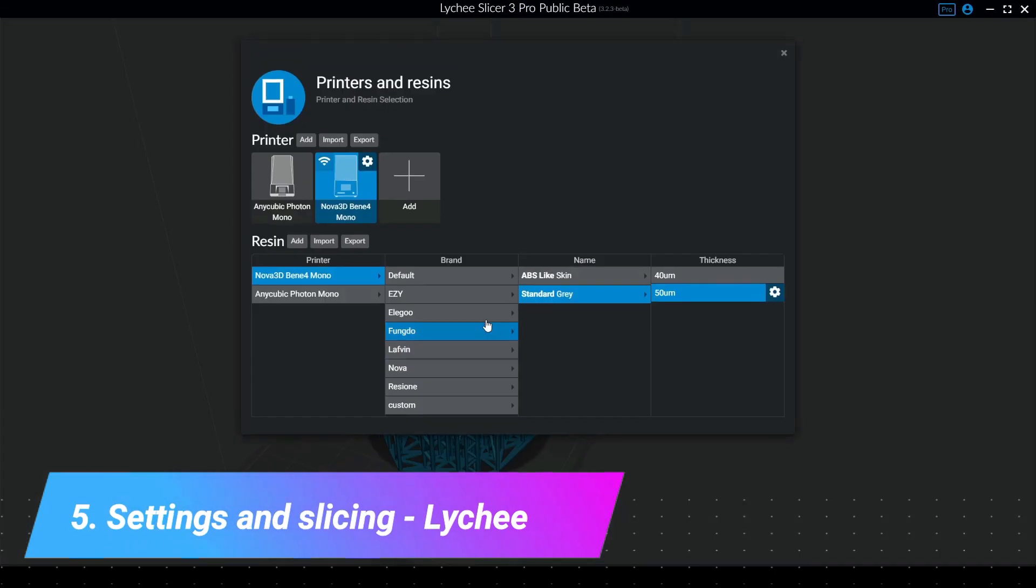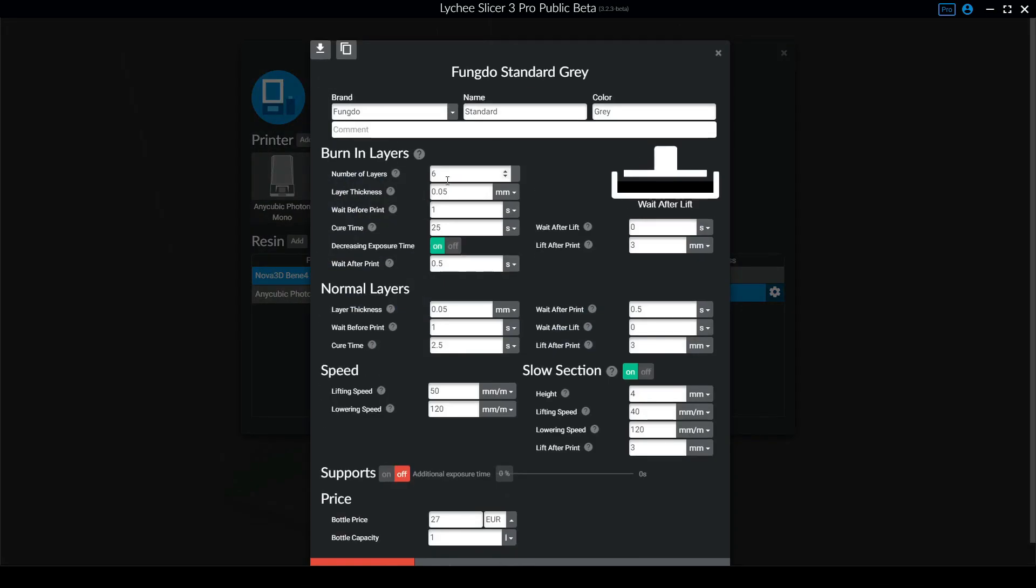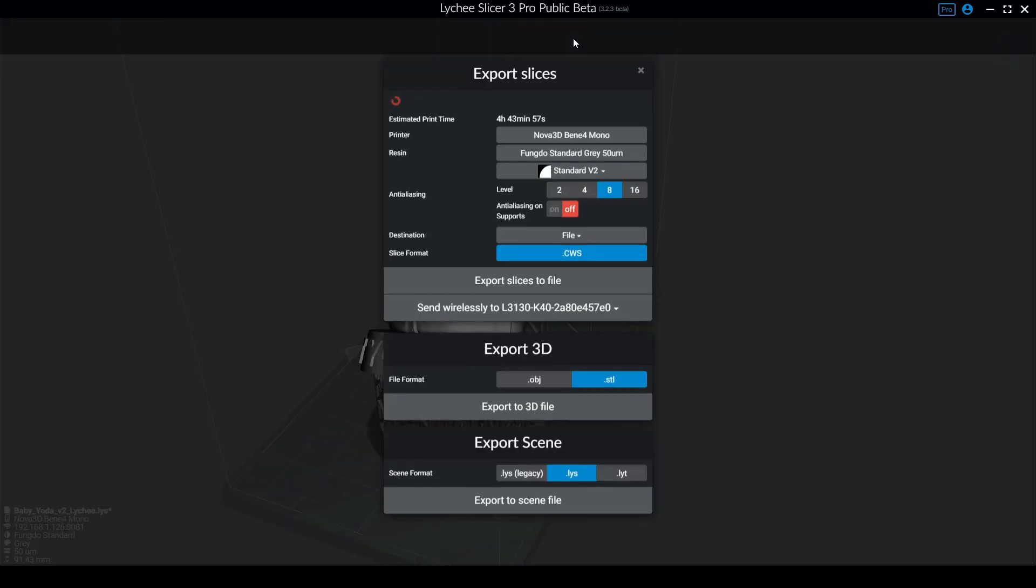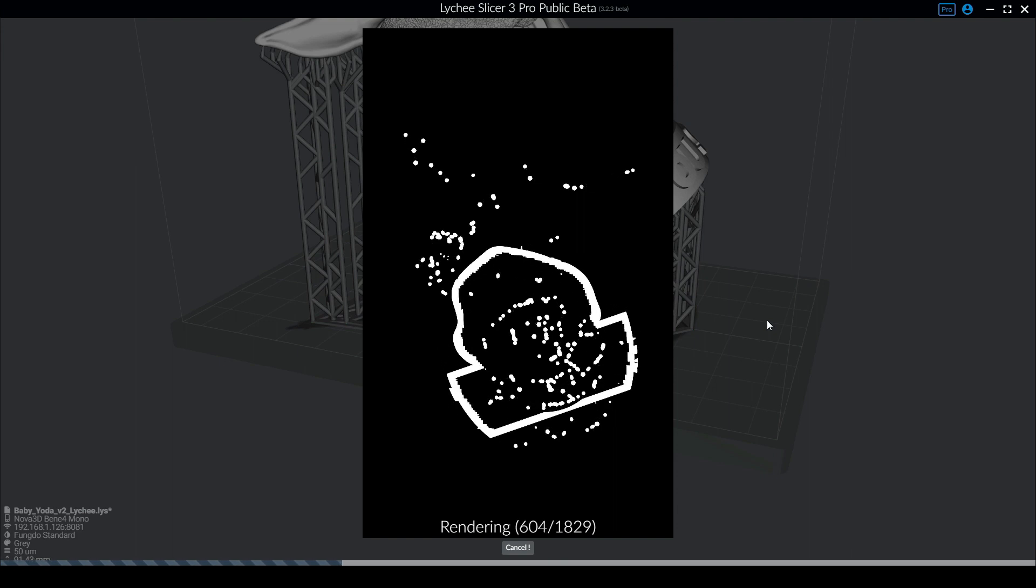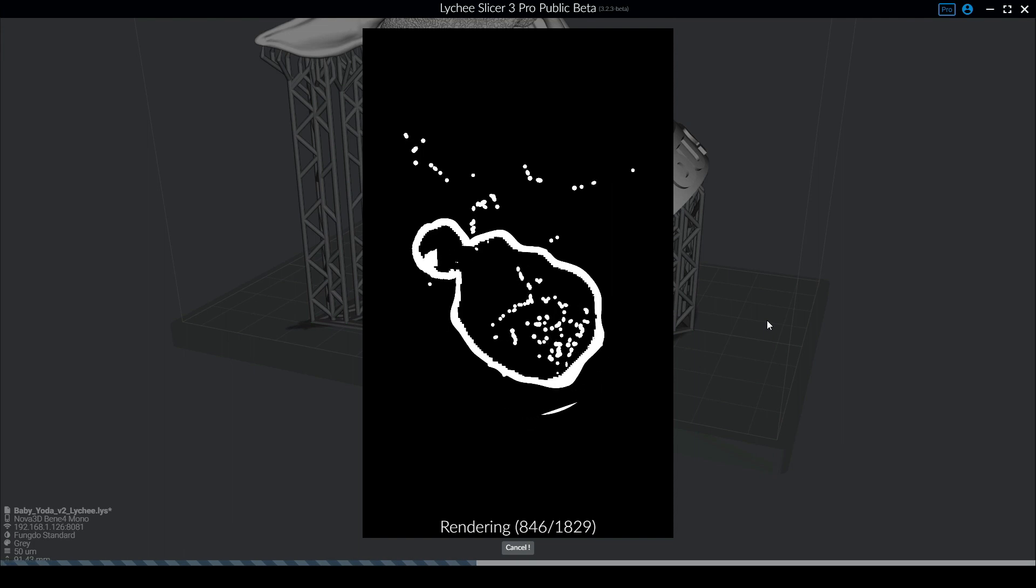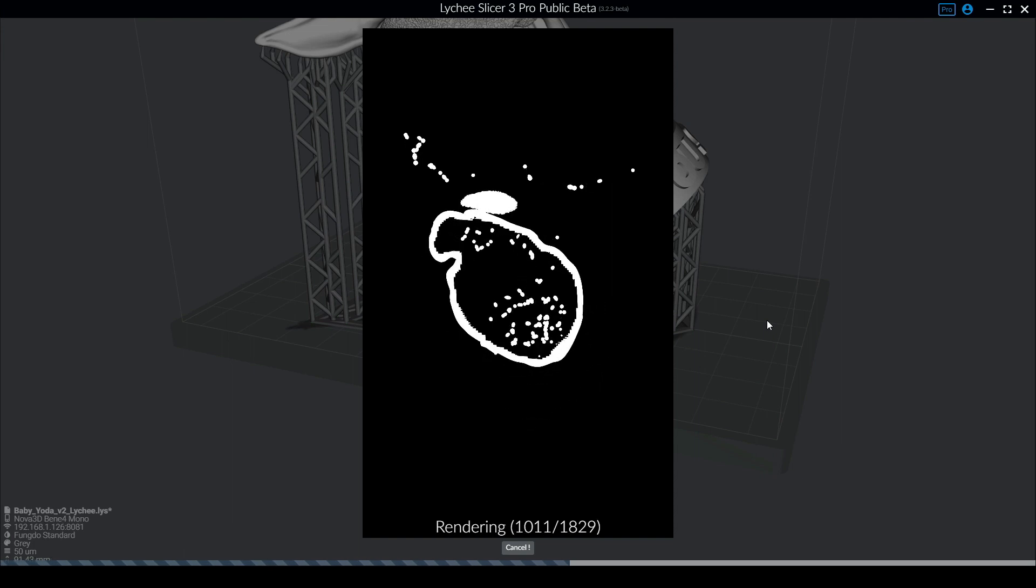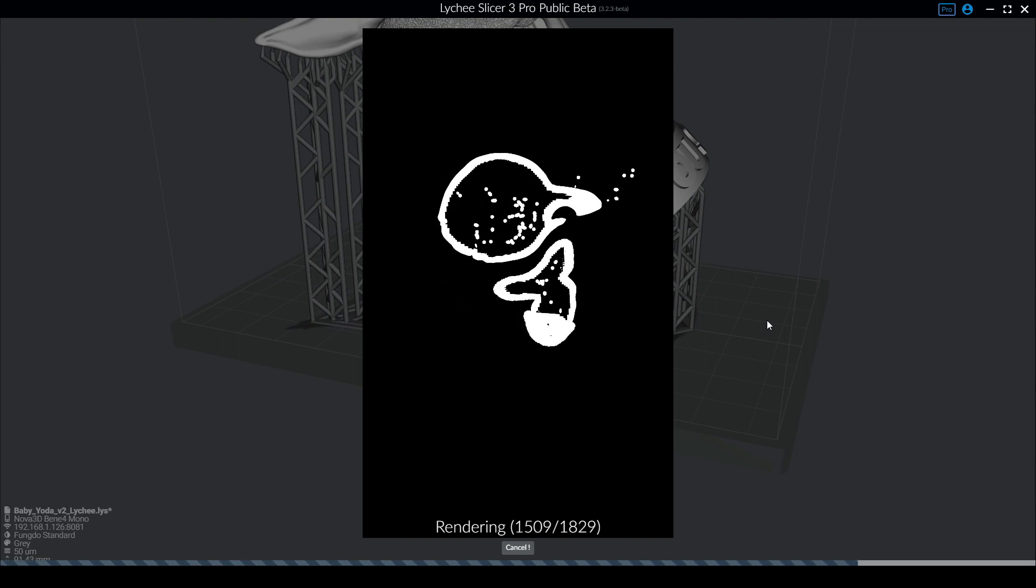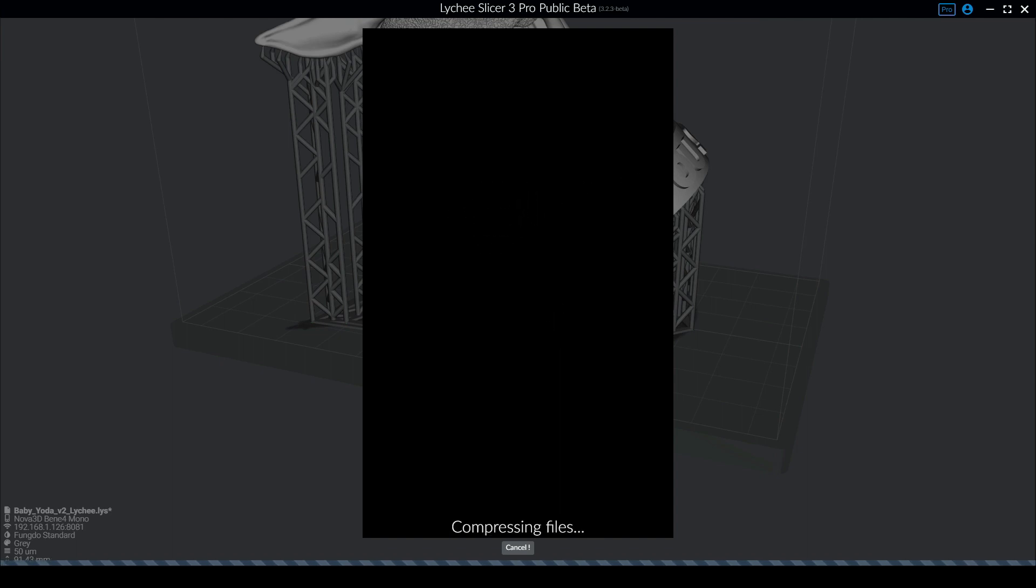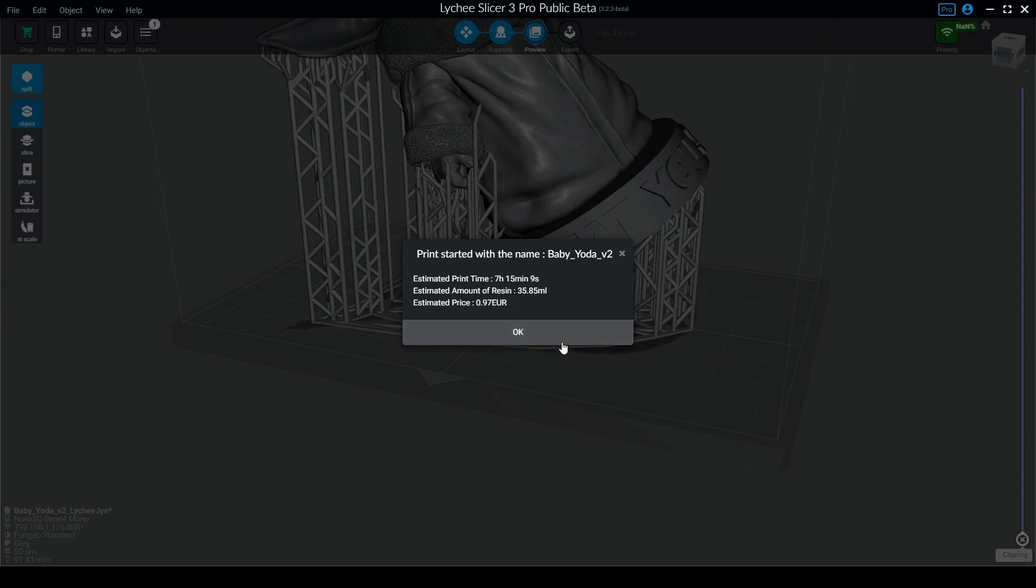The next step now is to check your settings to see if the configuration of the resin that you are going to use is okay. In this case, I'm going to print on my Phrozen Sonic Mini 4K, and I'm checking if everything is okay. And here, the slicer is really slicing the file into different layers, and that's how your printer will print your file. It will cure layer by layer until you have an entire model on your build plate. At the end, it shows how much resin you are going to use, and the time.